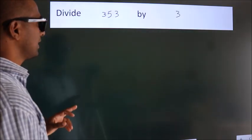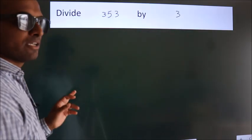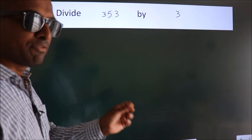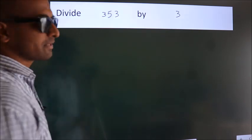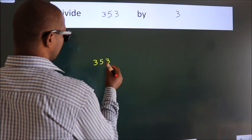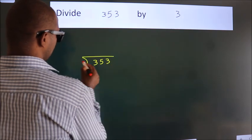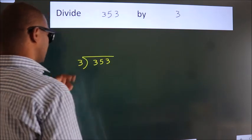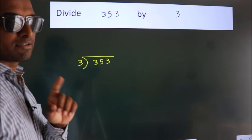Divide 353 by 3. To do this division, we should frame it in this way. 353 here, 3 here. This is your step 1.